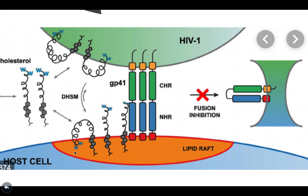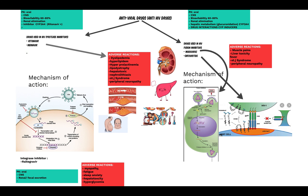GP41 is what helps the HIV cell attach to the host cell. So enfuvirtide blocks this attachment, again blocking fusion. Maraviroc and enfuvirtide have CNS distribution, bioavailability of 60-80%, renal elimination, undergo hepatic metabolism, and are potent CYP3A4 inducers. Their adverse reactions include muscle pains, Stevens-Johnson syndrome, and peripheral neuropathy.